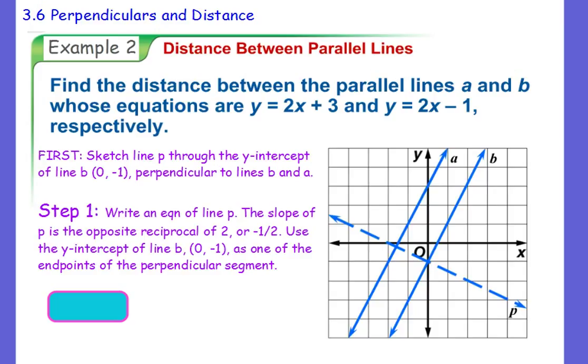So go ahead and make sure you write these steps down. So our first step now is we're going to write the equation of that line that we just drew. So we have a perpendicular line drawn between them. We need the equation of it. So as it says right here, the slope of P, that's what we're calling this line, is the opposite reciprocal of 2. So it's negative 1 half. That's our slope. And we can use the y-intercept of line B, 0, -1, as one of our endpoints of this segment. So that's basically why I decided to start it there, is because it's going to make the equation of the line really easy to write. Because now I have its y-intercept and I have its slope. So my y-intercept, my B happens at -1, and then my slope M is -1/2. So the equation of the line would be y = -1/2x - 1. There we go, so now we have an equation written for this line right here.